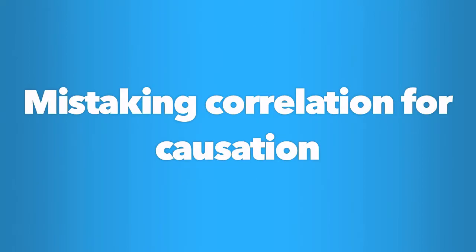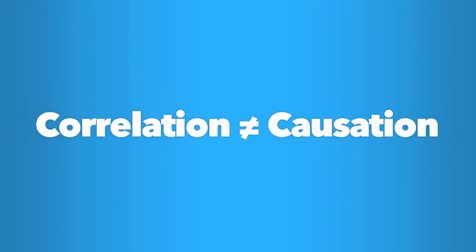Mistaking correlation for causation. You know about the difference between correlation and causation. Confusing the two, believing that correlation equals causation, is one of the most common mistakes people make when they're engaged in causal reasoning. People often have preconceived beliefs about things, and these can influence their causal reasoning.